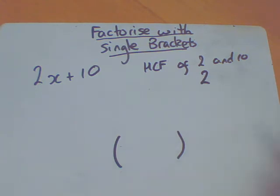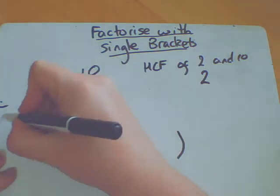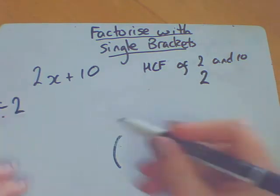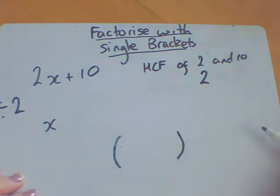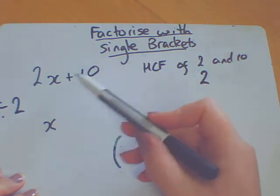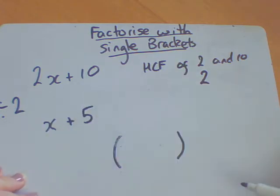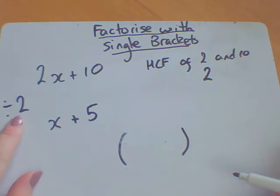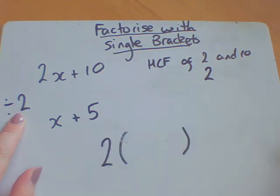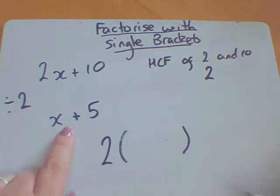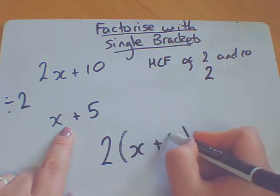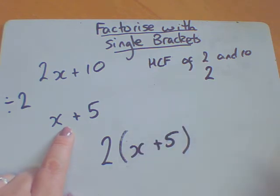What I'm now going to do is divide this thing here by 2. So 2x divided by 2 would give me a single x. 10 divided by 2 gives me 5. What this has done, this number here is the one that goes on the outside of the brackets. So this is what is going to go on the inside of the brackets.